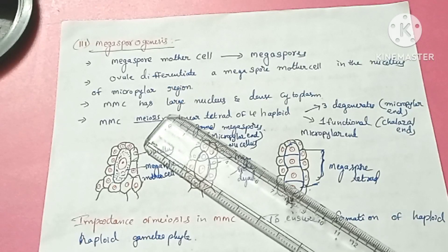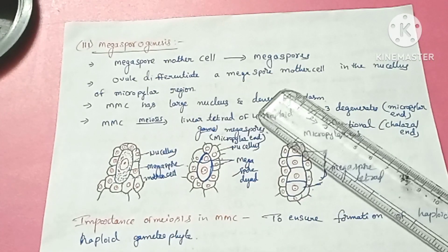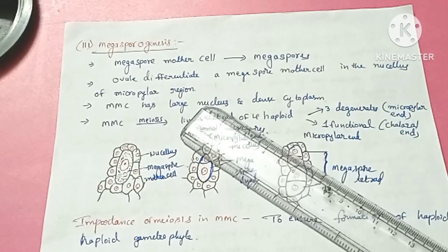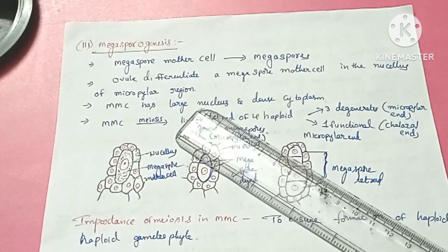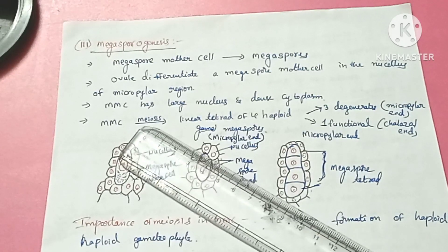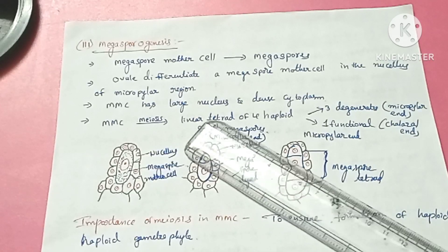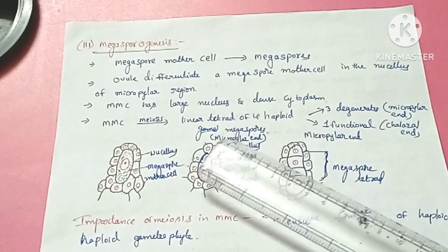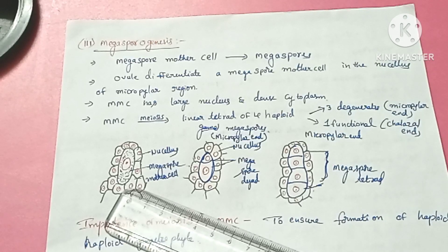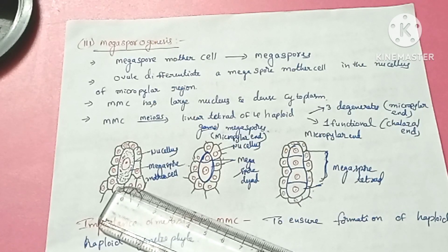Ovules generally differentiate a single megaspore mother cell in the micropylar region of the nucellus. This single megaspore mother cell has a large nucleus and a dense cytoplasm — it has a prominent nucleus and a dense cytoplasm.